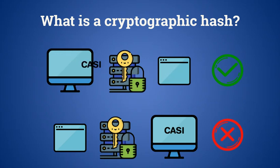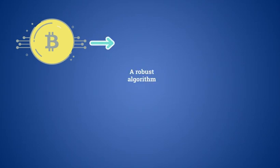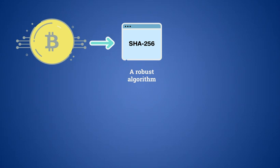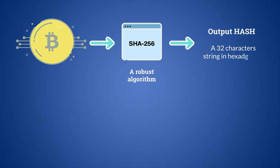Every cryptographic encoding process involves the use of an algorithm that defines the properties and calculations necessary to produce the final result — that is to say, the hash. Bitcoin uses a very robust algorithm created by the National Security Agency called SHA-256, which regardless of the size of the file inserted returns a string of 32 characters in hexadecimal format. Changing even a single character of the input file will result in a complete alteration of the output.